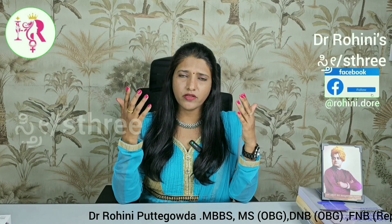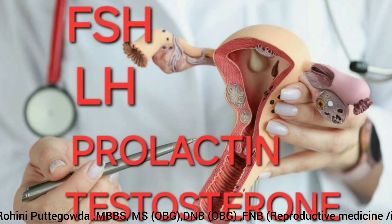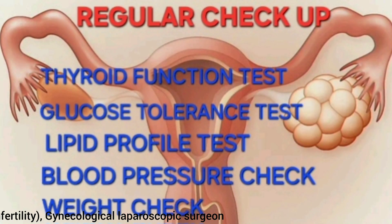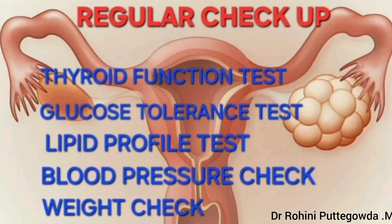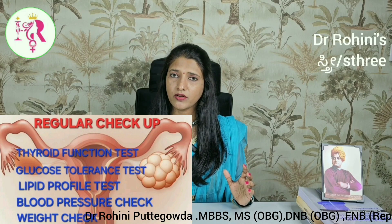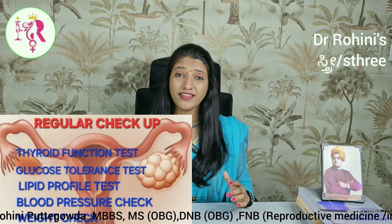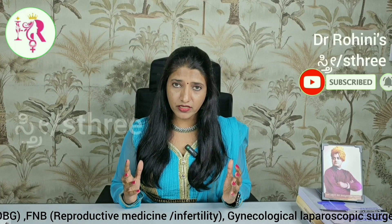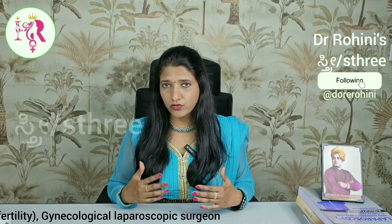Once we diagnose PCOD, apart from the many hormonal tests like FSH, LH, prolactin levels, and androgen levels, we have to do some more tests to improve the quality of life of the patients with PCOD. We need to do thyroid function tests to rule out any thyroid problems. Because there is increased risk of diabetes, we need to do GTT regularly — maybe once every one or two years. They need to check their blood pressure regularly, do their lipid profiles regularly, check their weight, and follow a healthy lifestyle. By following all these measures, the ill effects of PCOD can be reduced in the long run.